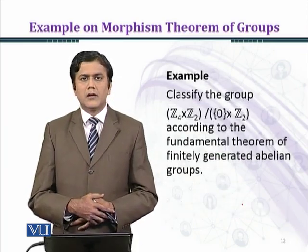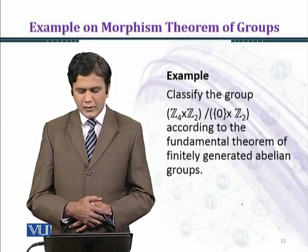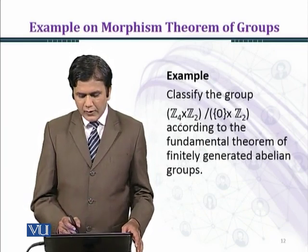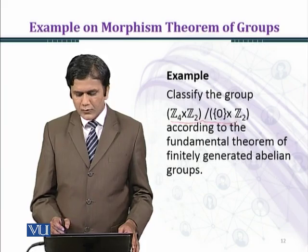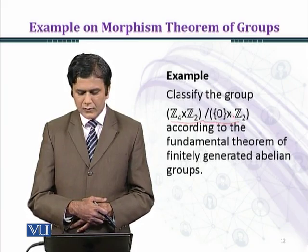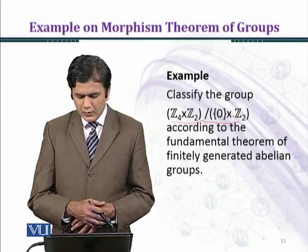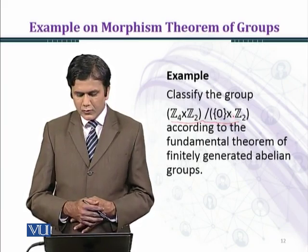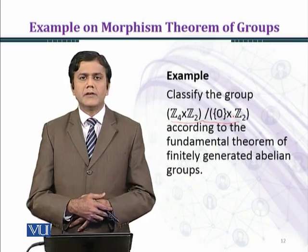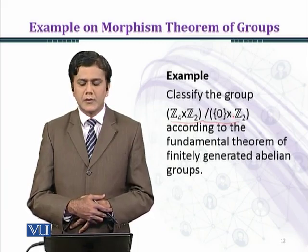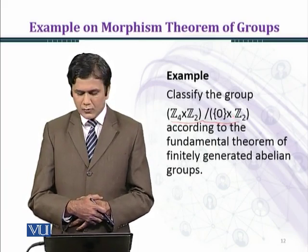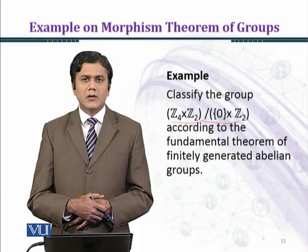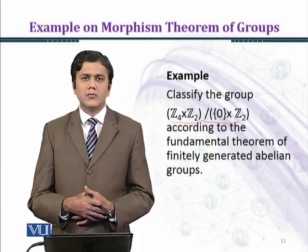Now we shall consider an example: classify the group Z4 cross Z2 over 0 cross Z2. This is a factor group, and according to the fundamental theorem of finitely generated abelian groups, this quotient group has two elements — wait, we shall examine it carefully.